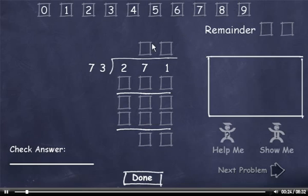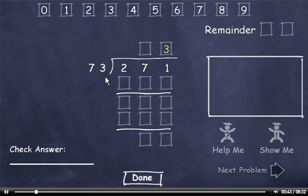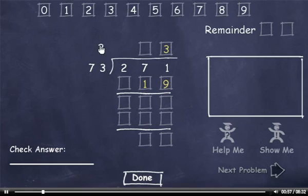271 divided by 73. 73 cannot go into 27, but it can go into 271 three times. 3 times 3 is 9, and 3 times 7 is 21. I can't subtract 9 from 1, so I'll have to borrow.